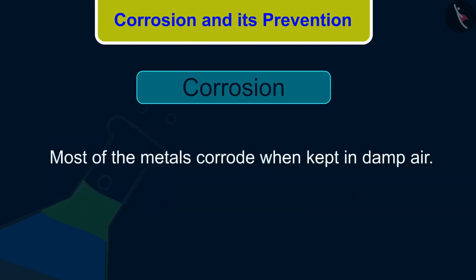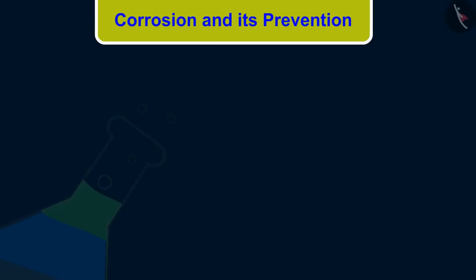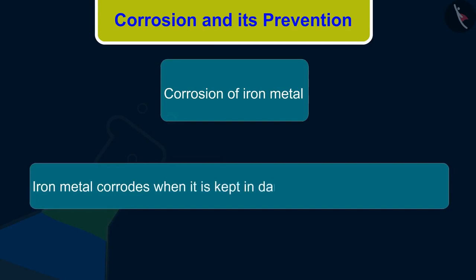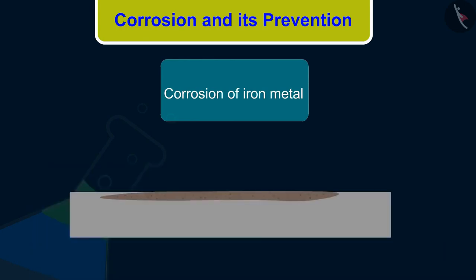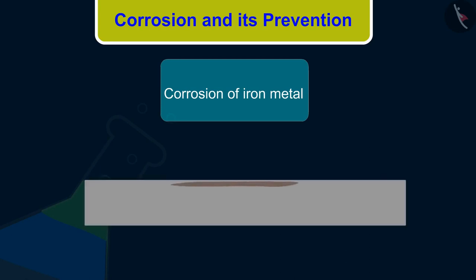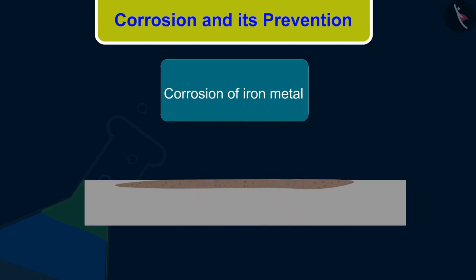Most of the metals corrode when kept in damp air. Let's discuss about corrosion of iron metal. Iron metal corrodes when it is kept in damp air for a considerable time. It gets covered with a reddish-brown flaky substance which is called rust. This process of corrosion of iron is called rusting of iron. Rust is soft and porous and it gradually falls off from the surface, and then the iron below starts corroding.